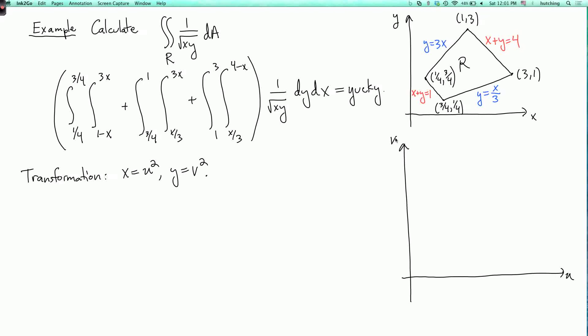So let's figure out where the boundary edges go. And so the line y equals x over 3 becomes the line v over u equals 1 over the square root of 3. And the line where y equals 3x becomes the line v over u equals the square root of 3.